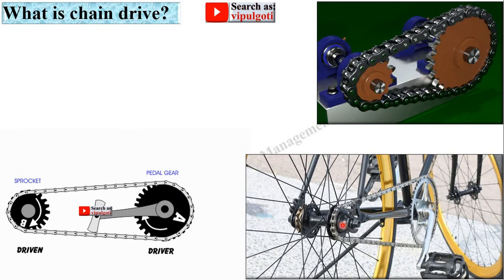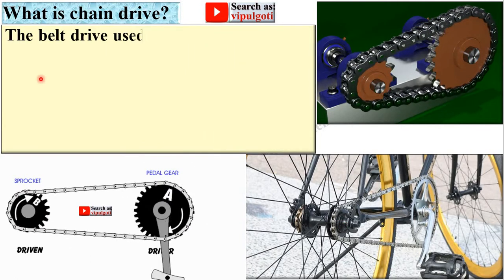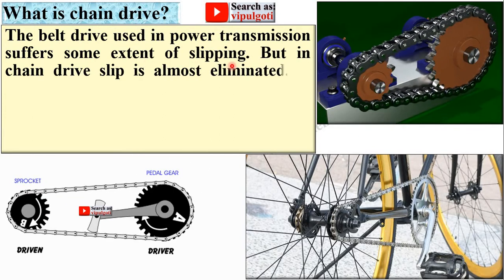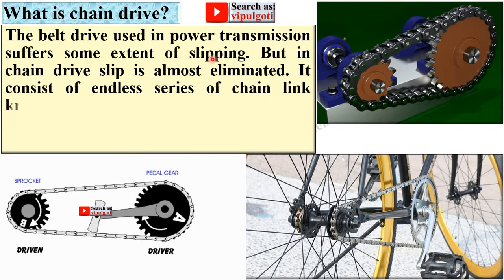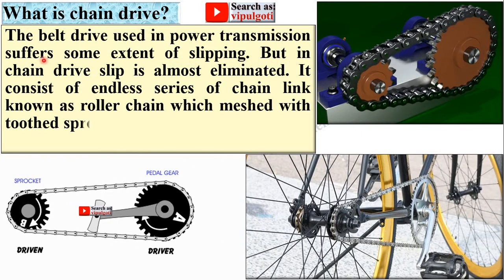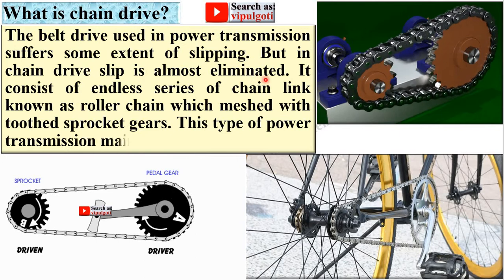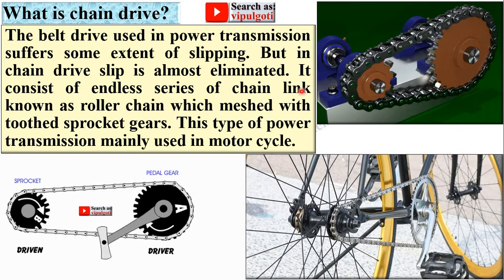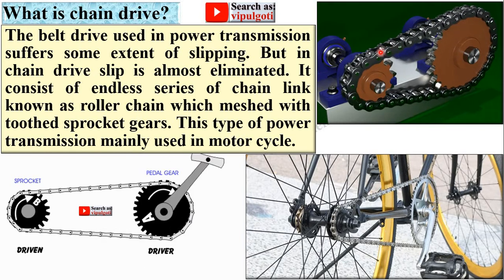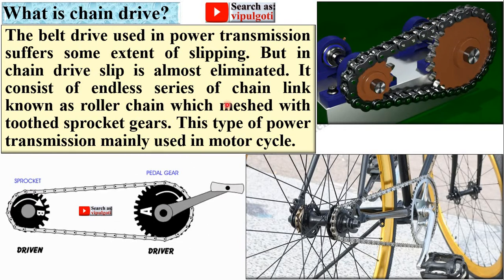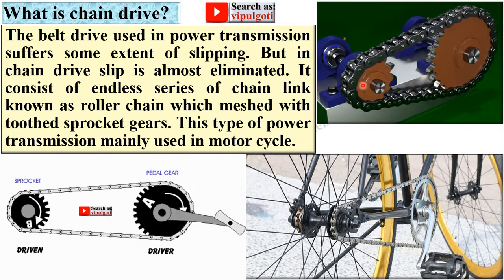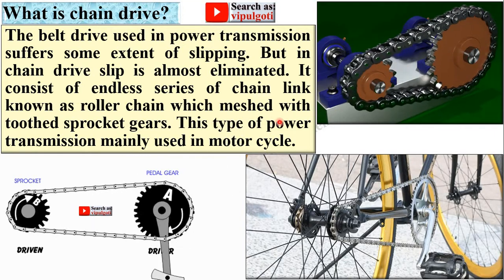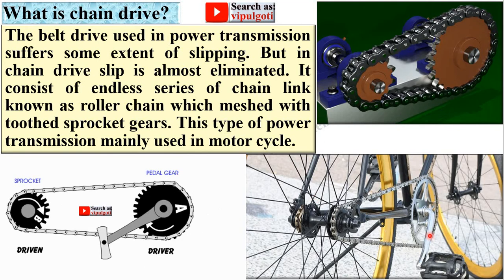This is really very simple. The belt drive used in power transmission suffers some extent of slipping and that we have seen in the previous video, but in chain drive slip is almost eliminated. It consists of endless series of chain links, known as roller chain, which match with the tooth sprocket gears. This type of power transmission mainly used in motorcycle.